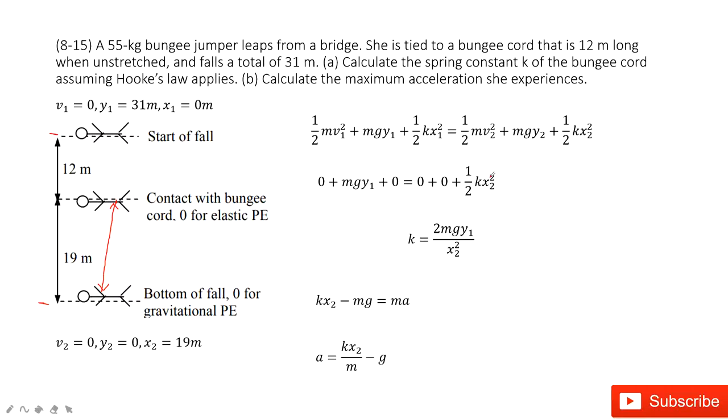Then we can input the known quantities. V1 is 0, making this term 0. And x1 is 0, making this term 0. And then v2 is 0, and y2 is 0. Finally, only these two terms survive.